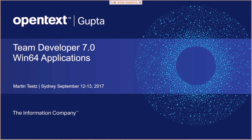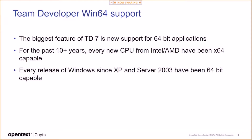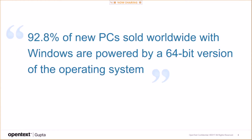Let's talk about TeamDeveloper 7.0 Win64 applications. First, a bit of information. The biggest feature of TD7.0 is the new support for 64-bit applications. For the past 10 years, every new CPU from Intel and AMD has been X64-capable, and every release of Windows since XP and Server 2003 has been 64-bit capable. 92.8% of new PCs sold worldwide with Windows are powered by a 64-bit version of the operating system.